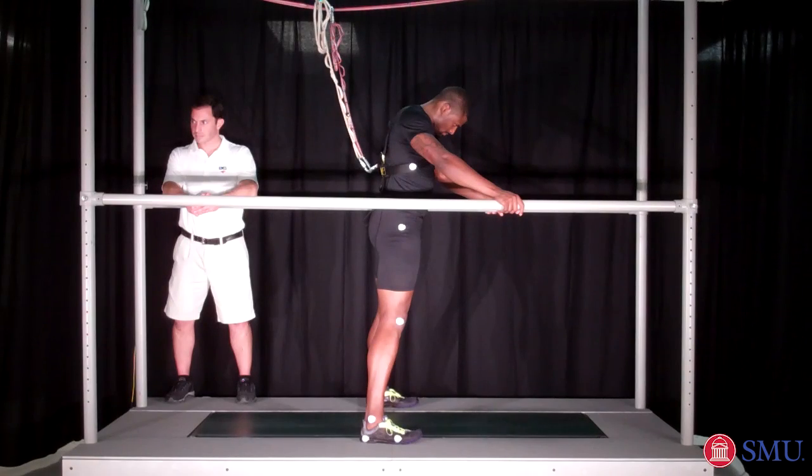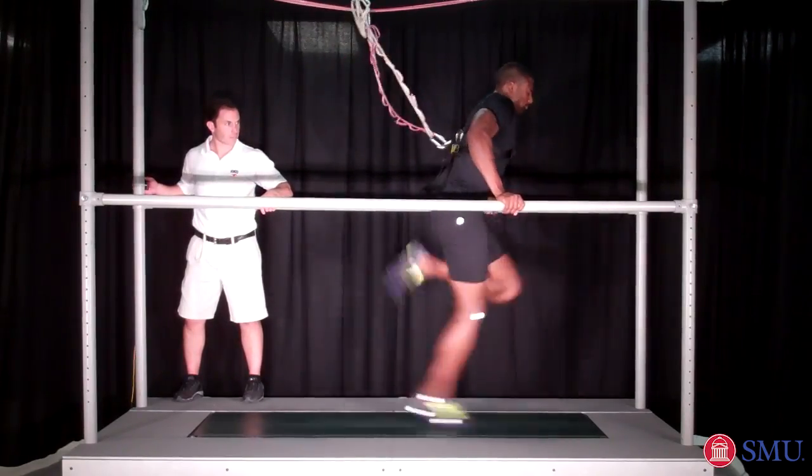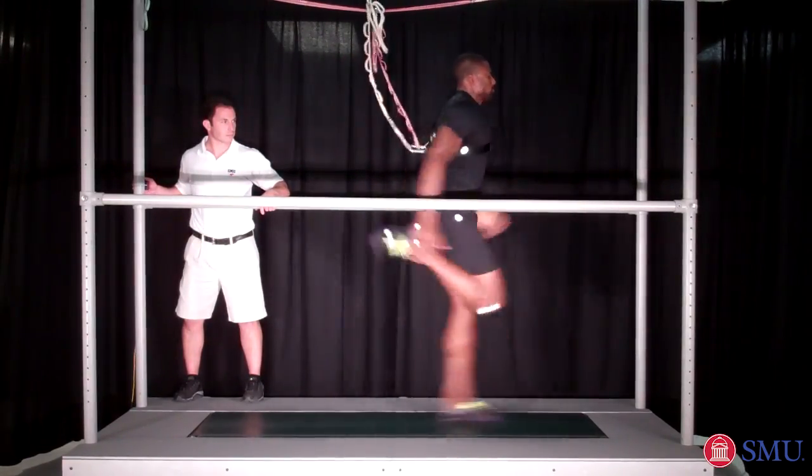This is world champion and gold medalist in the 110 meter hurdles, David Oliver, running at 10.2 meters per second on the SMU high speed force treadmill.